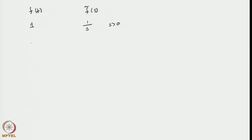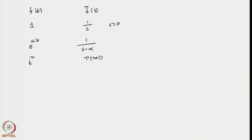Similarly, if f(t) equals e to the power alpha t, then integrating e to the power (alpha minus s)t dt gives 1 by (s minus alpha). We can see that this will have a pole at s equal to alpha. If the function is t to the power n, then it is the case of putting lambda equal to 1 in the previous example, giving gamma(n+1) divided by s to the power n+1.